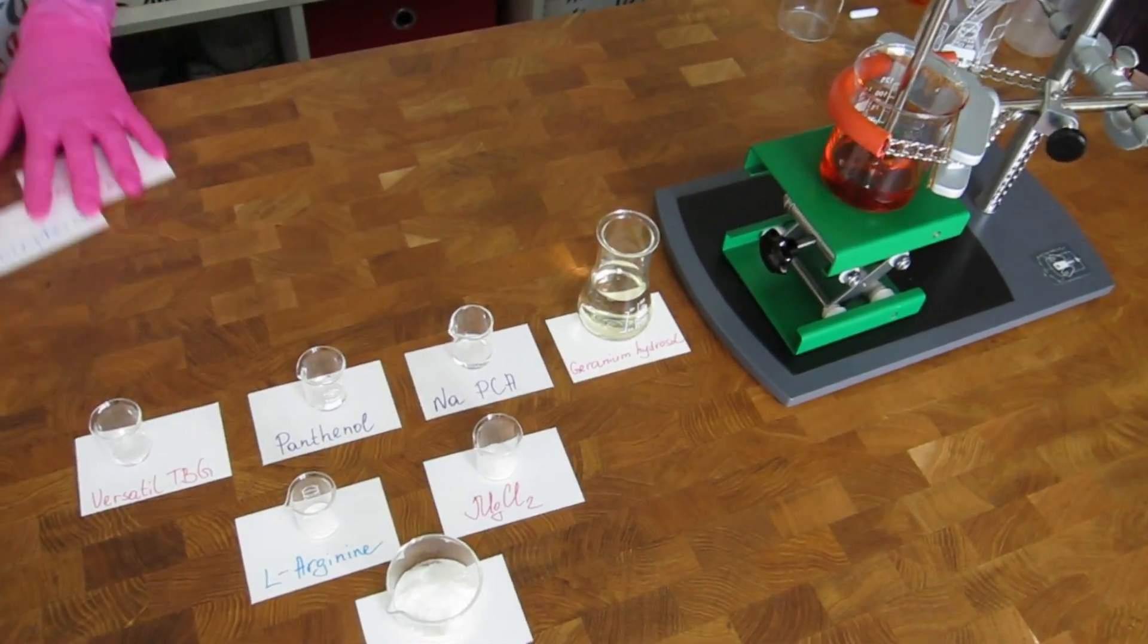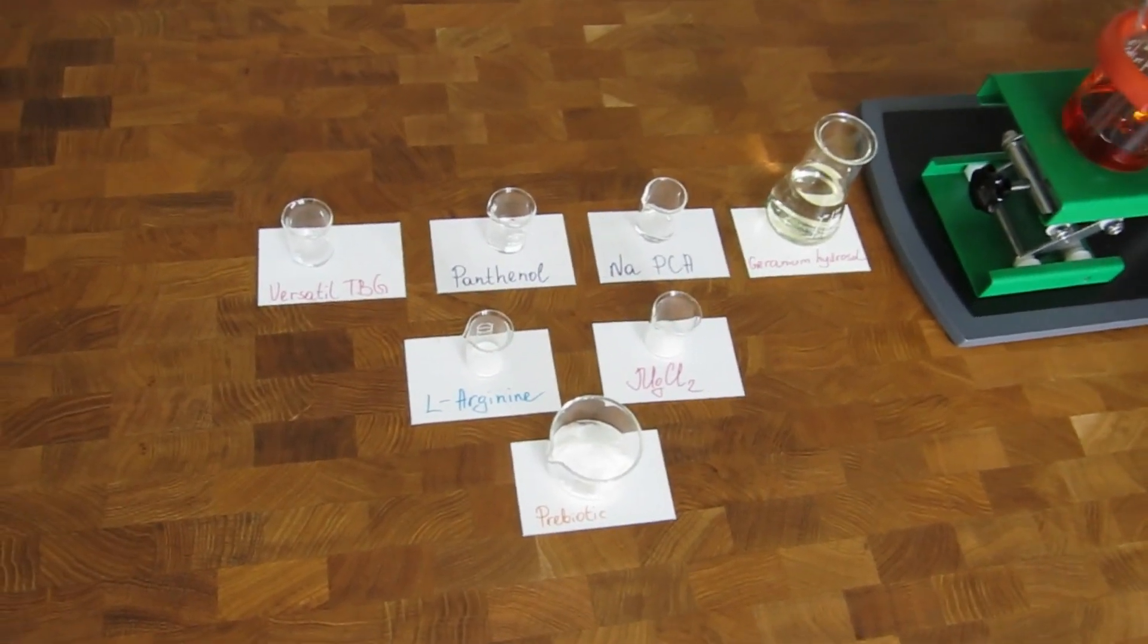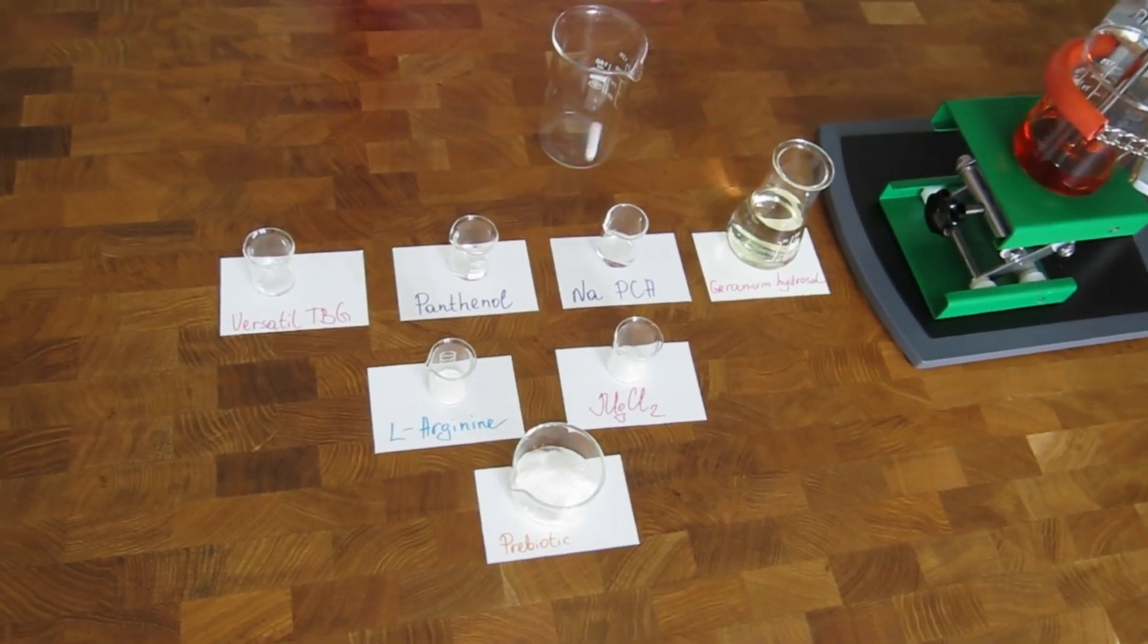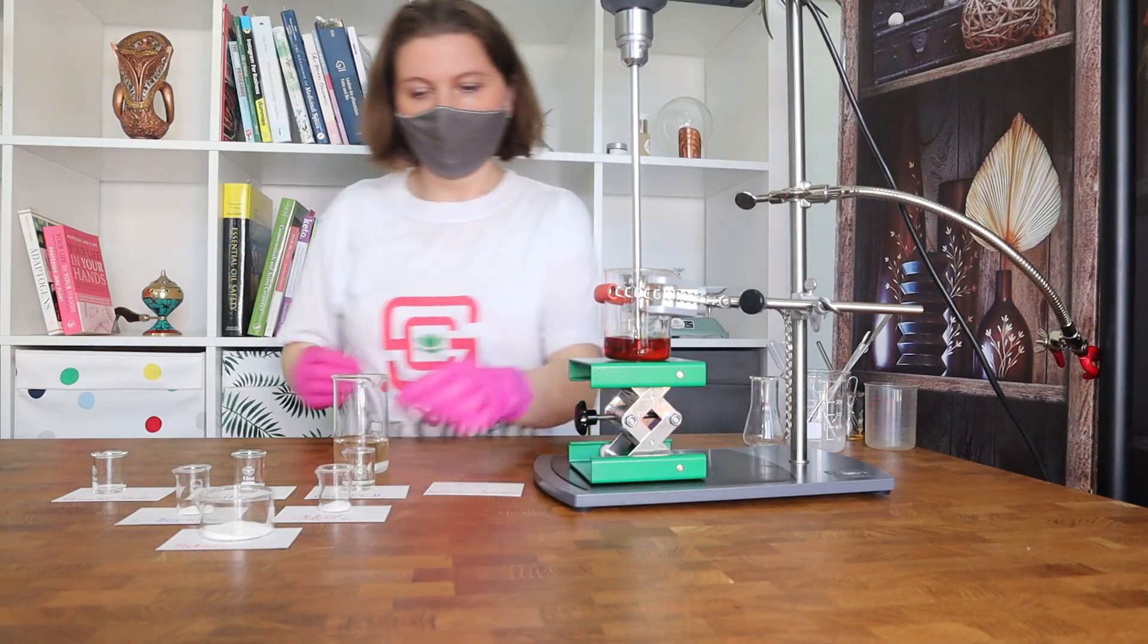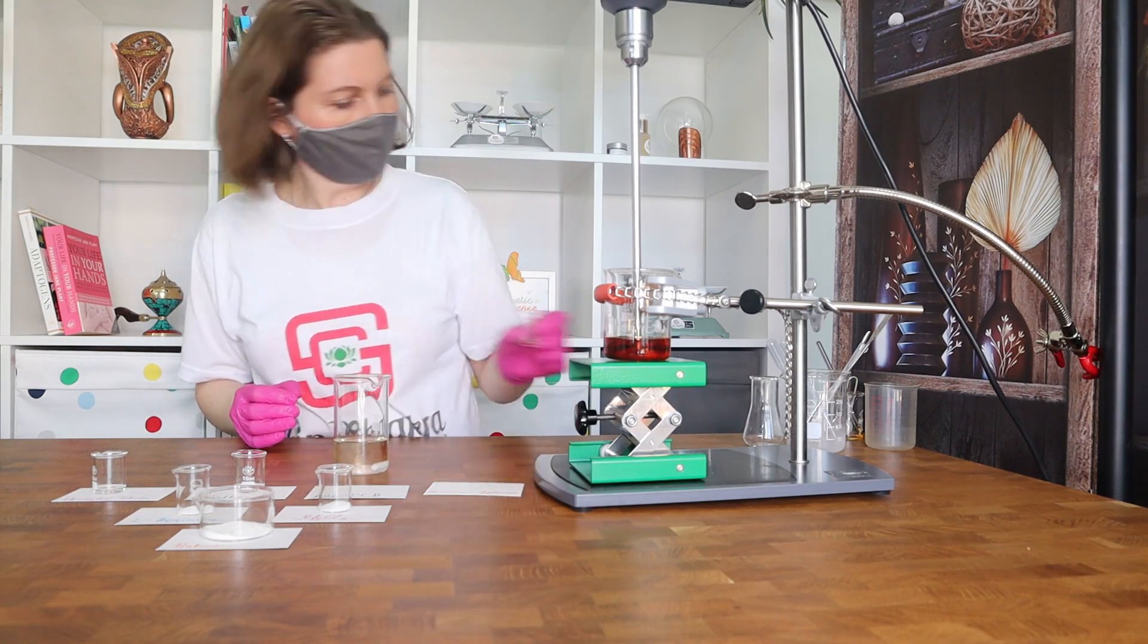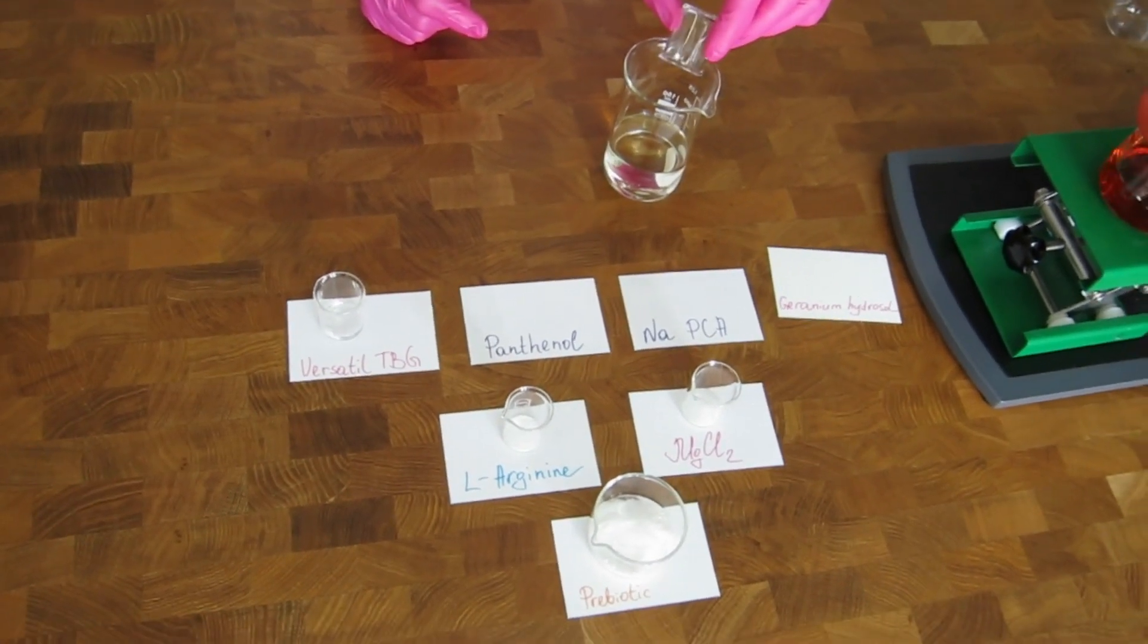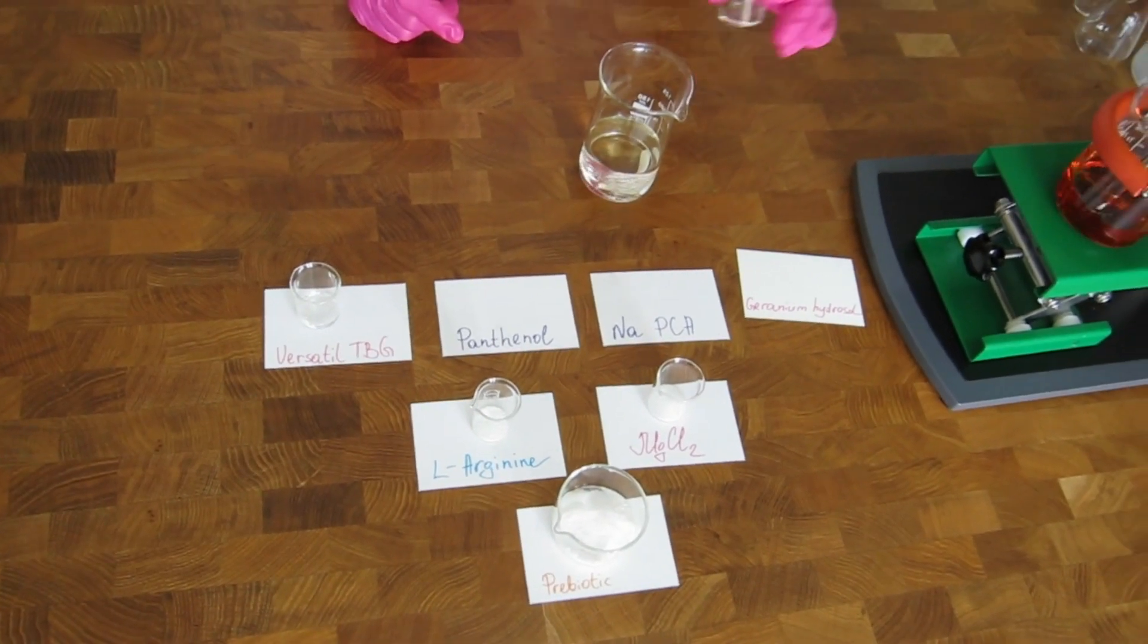This is an overhead stirrer with propeller blade, and now we will blend the ingredients of the water phase which consists of a hydrosol because we are not going to heat it, sodium PCA which is a humectant and moisturizer, and panthenol for its moisturizing, wound healing, and skin soothing properties.